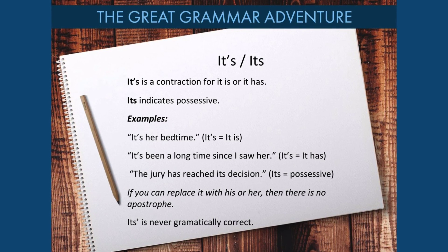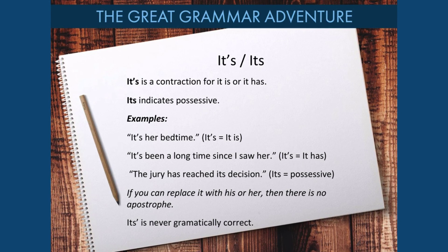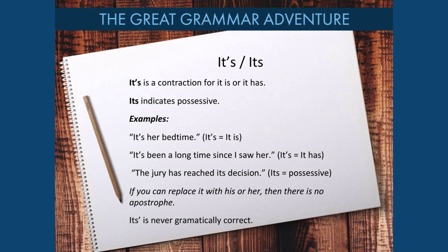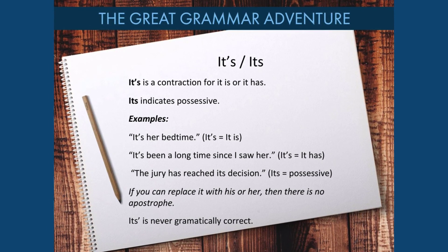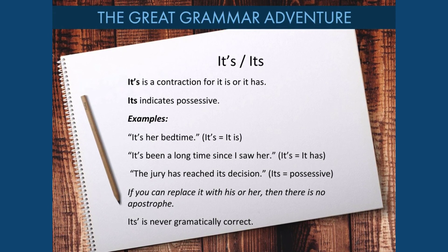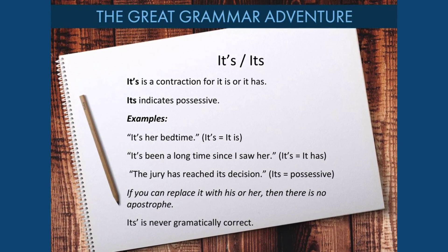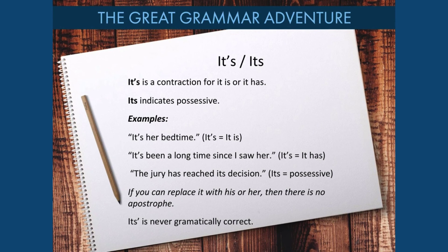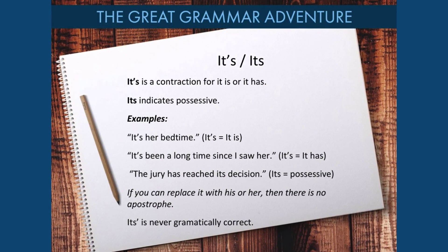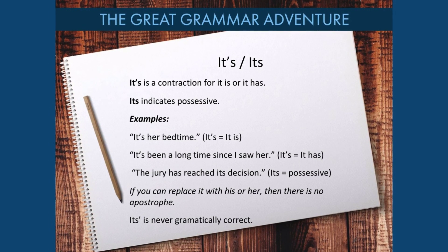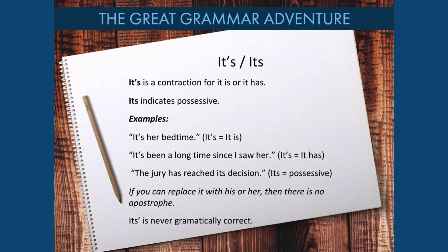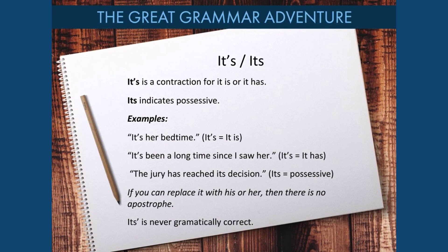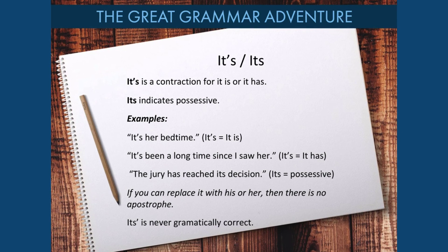I-T-S indicates possessive. For example: it's her bedtime means it is her bedtime. It's been a long time since I saw her — here it's represents it has. The jury has reached its decision — here its is possessive. Remember, if you can replace the word it with his or her, then there is no apostrophe. And I-T-S-apostrophe is never grammatically correct.